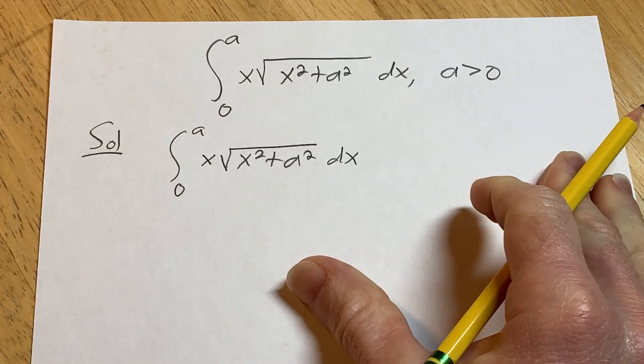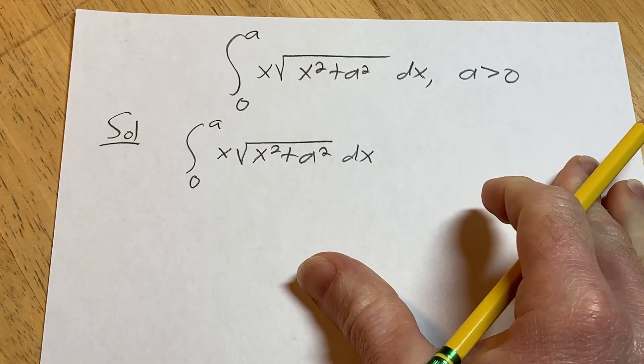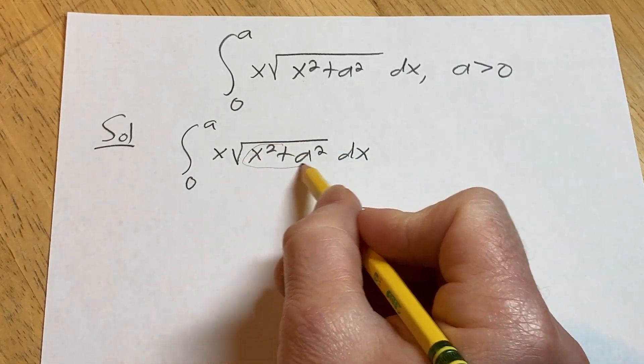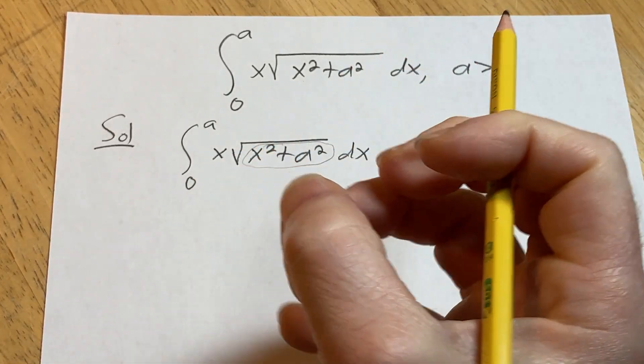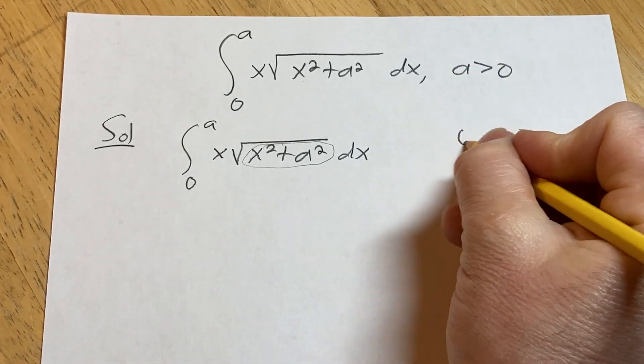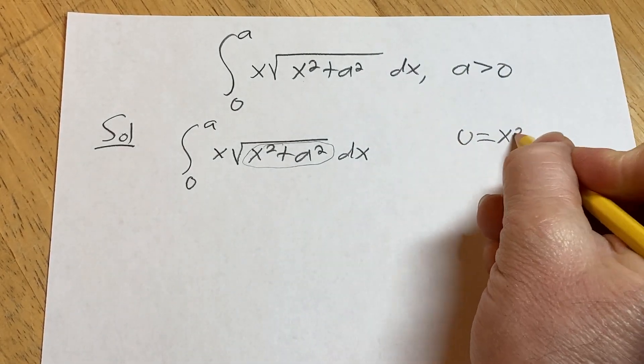So it looks like we're going to make a u substitution. That seems to be the best approach here. We're going to let u be what's inside the square root. Typically u is like your inside function. So u is equal to x squared plus a squared.